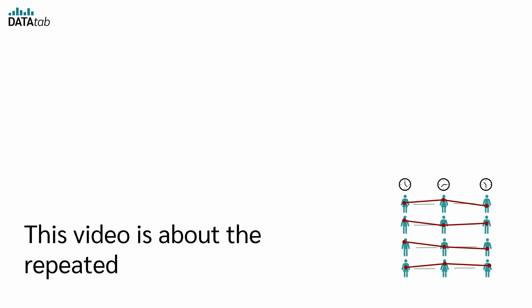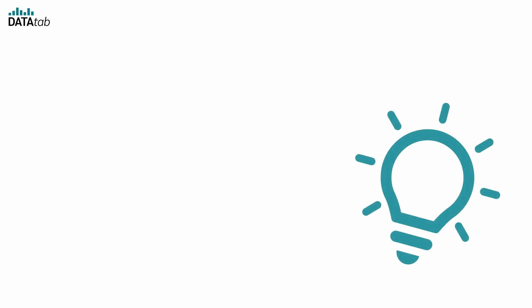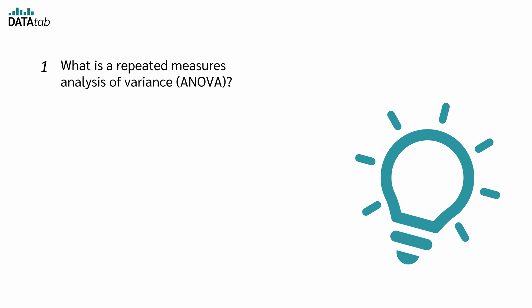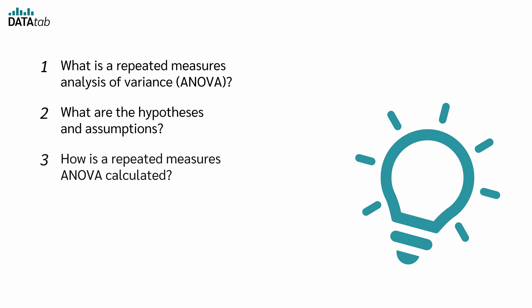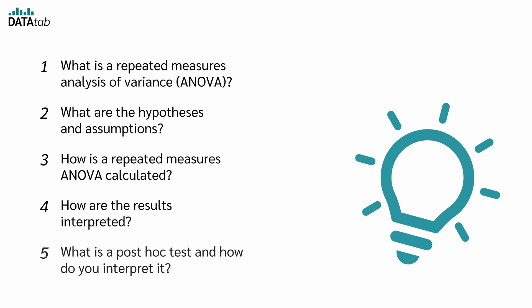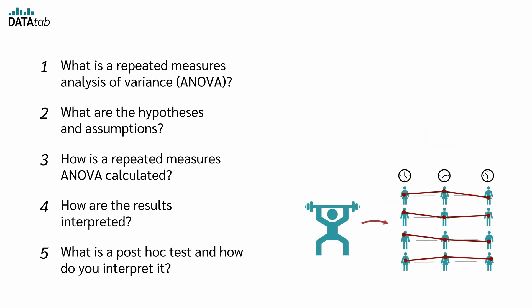This video is about the repeated measures ANOVA. We will go through the following questions: What is a repeated measures analysis of variance? What are the hypotheses and the assumptions? How is a repeated measures ANOVA calculated? How are the results interpreted? And what is a post hoc test and how do you interpret it? We'll go through all points using a simple example.